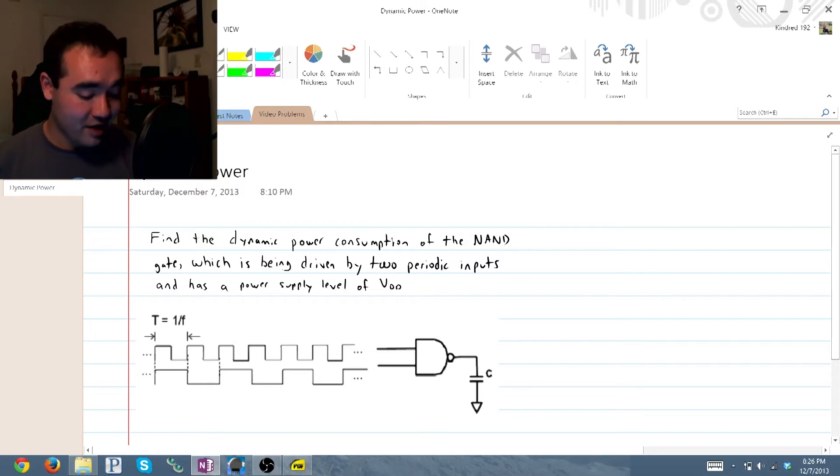Now this problem down here is about IC design dynamic power, and it's actually a very simple problem. All you have to do is remember the equation P dynamic is equal to C times VDD squared times the switching frequency.